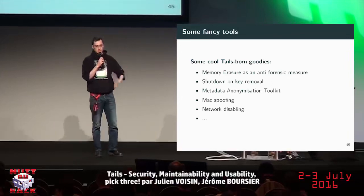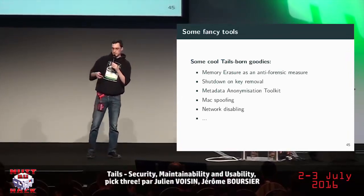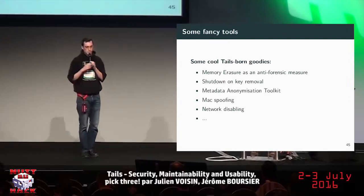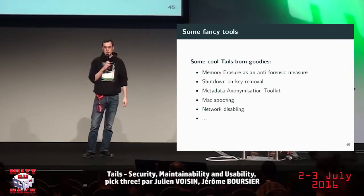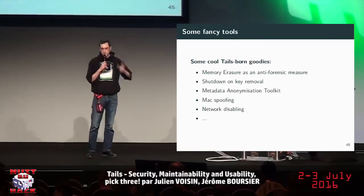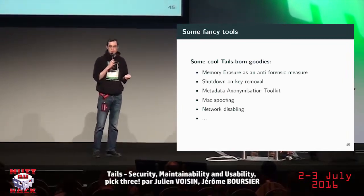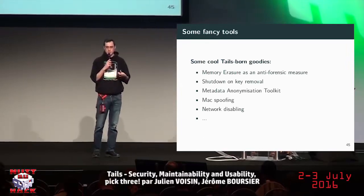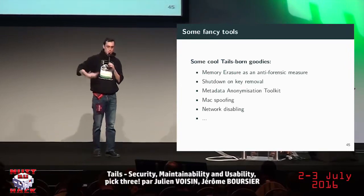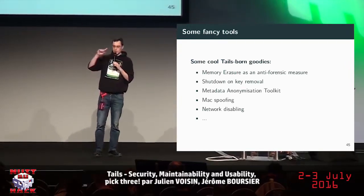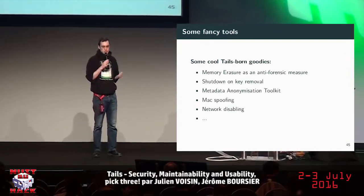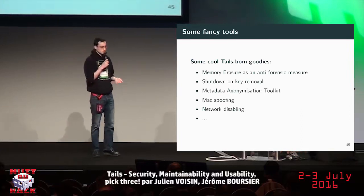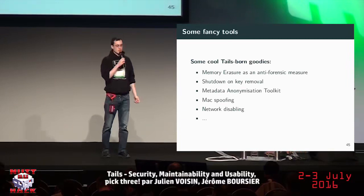When you remove the USB key, Tails shuts down — you can even wear a wristband tethered to your laptop so if someone tries to steal it, the USB key disconnects and the laptop shuts down. We also have the Metadata Anonymization Toolkit: give it photos or documents and it removes every single piece of metadata. We have MAC address spoofing — when you connect to a network it uses a fake MAC address, so you can't be tracked. In the greeter, you can completely disable networking for air-gapped use. And there are a lot of other goodies.